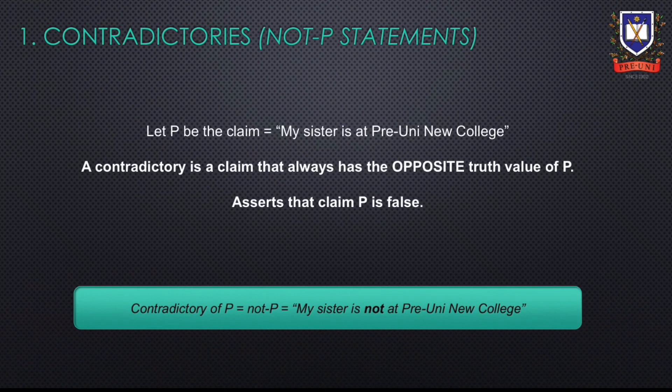Firstly, let's look at contradictories. Let P be the claim that my sister is at Pre-Uni New College. A contradictory is a claim that always has the opposite truth value of another claim. In this case, the contradictory would assert that the claim P is false. The notation for the contradictory of P is not P, which is: my sister is not at Pre-Uni New College.